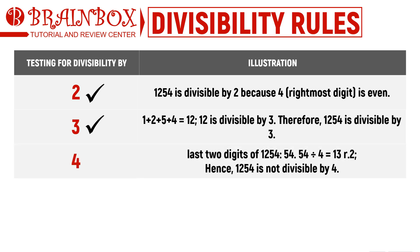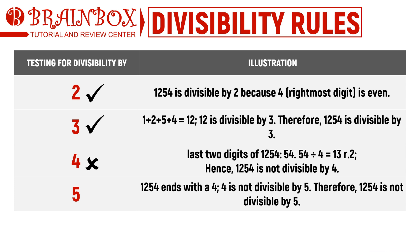Checking for divisibility by 4, we look at the number formed by the last two digits: 54. Since 54 is not divisible by 4 — it leaves a remainder of 2 — 1,254 is not divisible by 4. Next, 1,254 is not divisible by 5 because it ends in 4 instead of a 5 or 0.